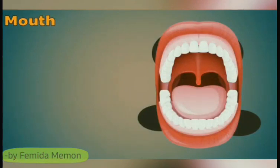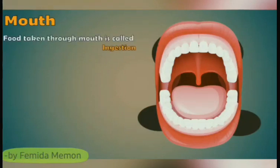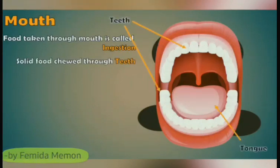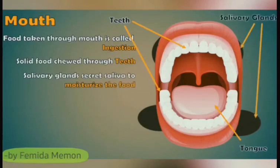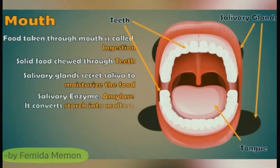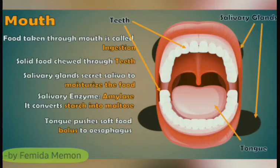Mouth: The first organ of the alimentary canal is the mouth. Food taken through the mouth is called ingestion. Solid foods are chewed here with the help of different types of teeth. The tongue and the cheeks also help in this process. During chewing, three pairs of salivary glands secrete saliva to moisten the food. The saliva helps in the chemical digestion of food. Saliva contains the enzyme salivary amylase, which converts starch into maltose. The tongue processes the soft food, called bolus, into the esophagus. The human body produces about 37,000 liters of saliva in a lifetime.